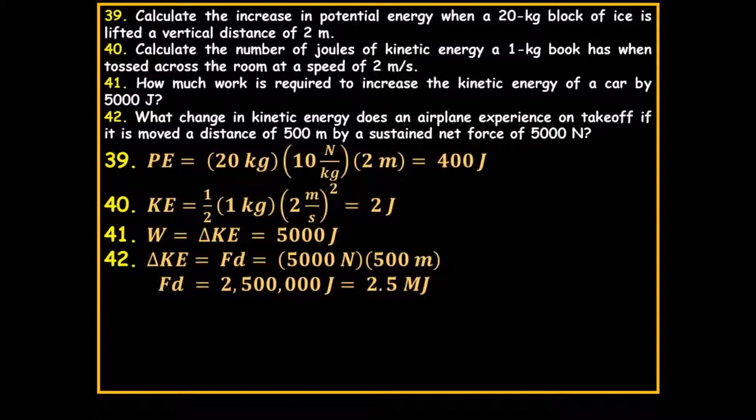Calculate the increase in potential energy when a 20-kilogram block of ice is lifted vertically 2 meters: 20×10×2 = 400 joules. Calculate the kinetic energy of a 1-kilogram book tossed at 2 meters per second: one-half × 1 × 2² = 2 joules. How much work is required to increase the kinetic energy of a car by 5000 joules? The work equals the change in KE, so 5000 joules.